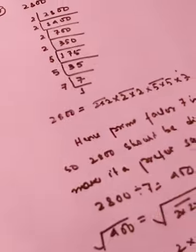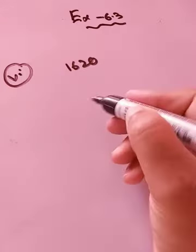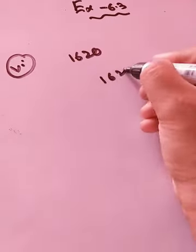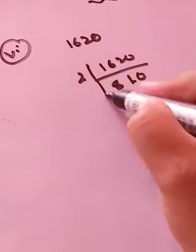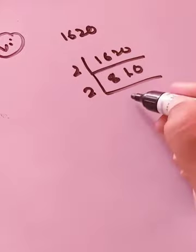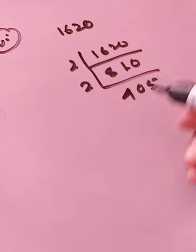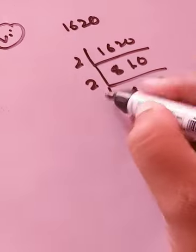Okay let us move on to question number 6. Yes this is question number 6. So let us begin. 2|1620. Okay now this will be divisible by 2, 2|810, 2|405.